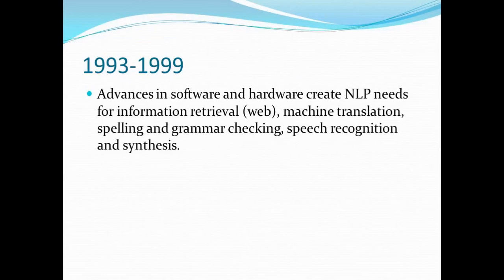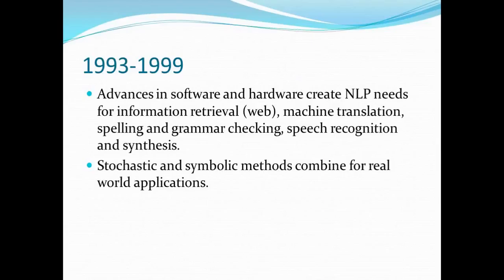After that, there were such advances in software and hardware that NLP needs took off, especially with the advent of the web. We had a lot of need for enhanced information retrieval, machine translation, spelling and grammar checking, and speech recognition and synthesis. Stochastic and symbolic methods started to be combined for real-world applications. At the end of today's lecture, you'll see a hybrid machine translation example that Nizar Havas and I worked on about a decade ago — that's where we developed CatBar, so you'll see the motivation for that.